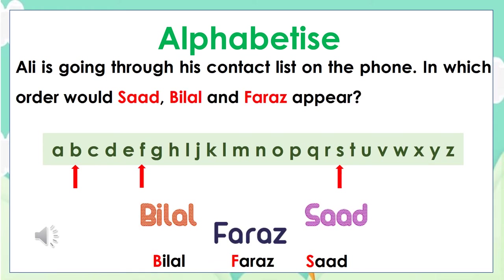Ali is going through his contact list on his phone. In which order would Saad, Bilal, and Faraz appear? He would find Bilal first, then Faraz, and finally Saad.